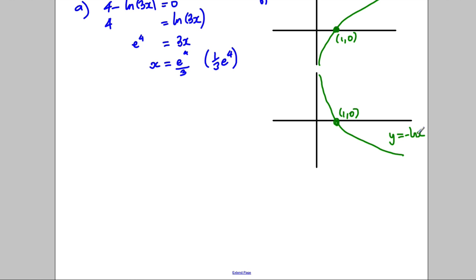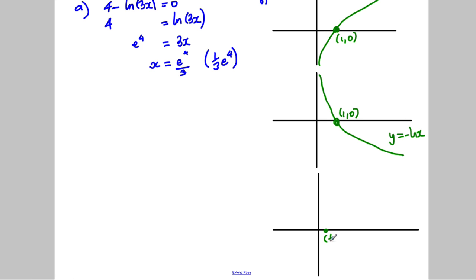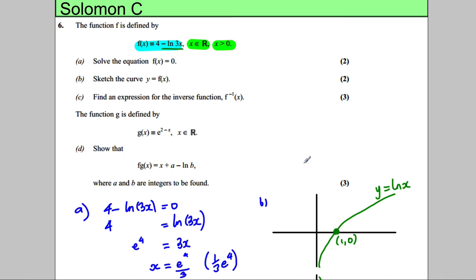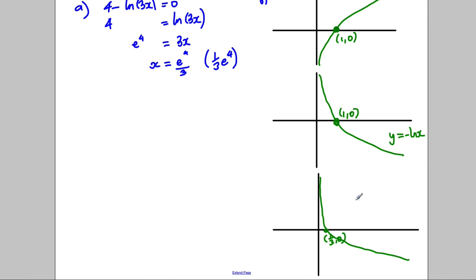Now let's make it the negative logarithm of 3x. The 3 is inside the brackets, inside the log. What that does is the opposite of what you think — it squashes everything by a third. So this point here would therefore be (1/3, 0), and it would look something like that. This is y equals negative the natural logarithm of 3x.